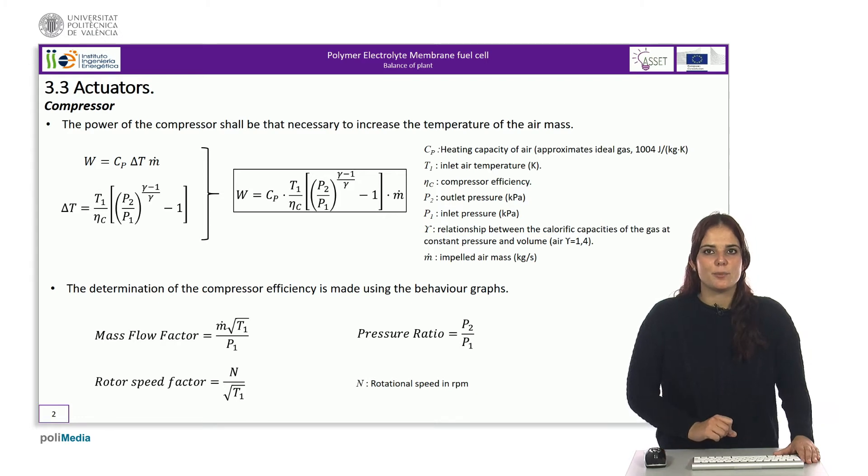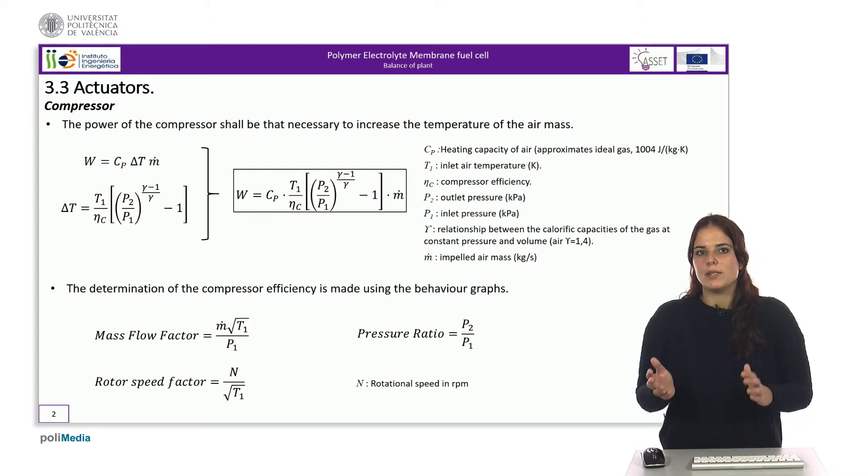The actuators of the balance of plant are the solenoid valves, power relays, and the compressor. The mode of operation of the relays and the solenoid valves is the same, since they are based on activating a solenoid that opens the electrical circuit or opens the valve.